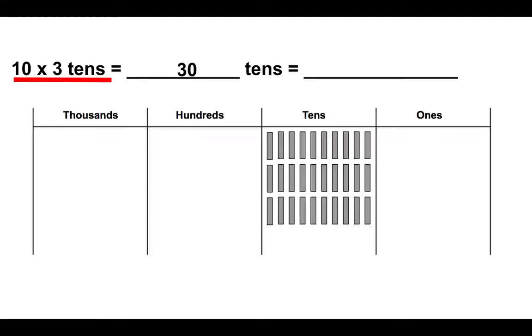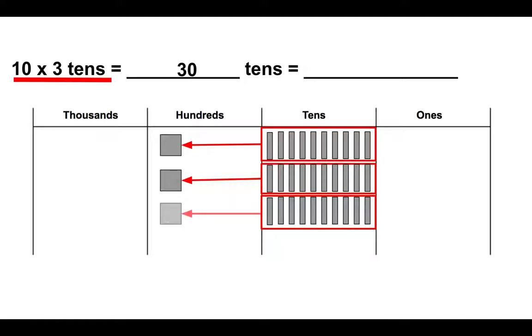Now what can I do to rewrite or redraw my thirty tens? Well, I can take the first group of ten tens and make one hundred. The next group of ten tens makes another hundred. And the third group of ten tens makes a final hundred. So I can say that thirty tens is equal to three hundreds.